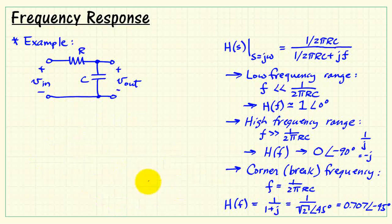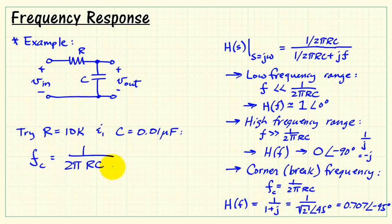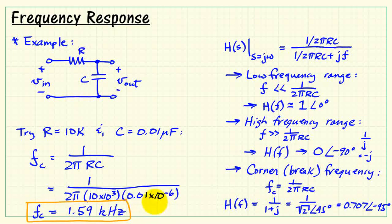All right, let's consider these results for a specific choice of component values for resistor and capacitor. I'm going to pick 10k for the resistor and 0.01 microfarads for the capacitor. If we evaluate the corner frequency expression, we have the value of 1.59 kHz. We'll call that f sub c.